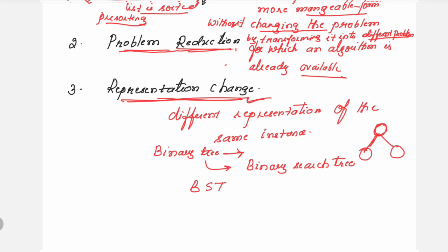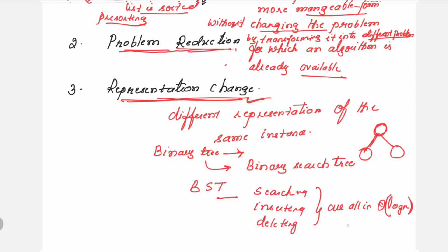What do we gain by such a transformation compared to the straightforward implementation? We gain time efficiency. If you look at the time efficiency for the binary search tree, the time efficiency for searching, inserting, and deleting an element is all theta of log n — but only in the average case.